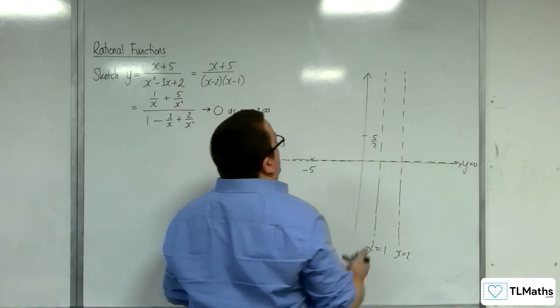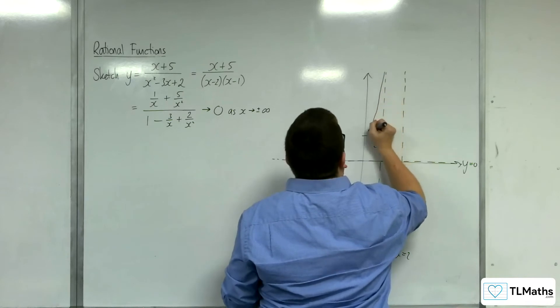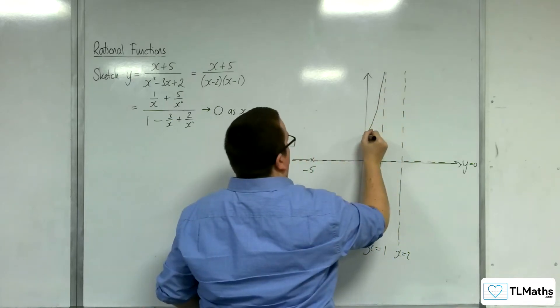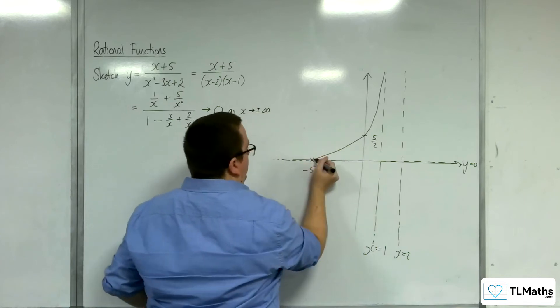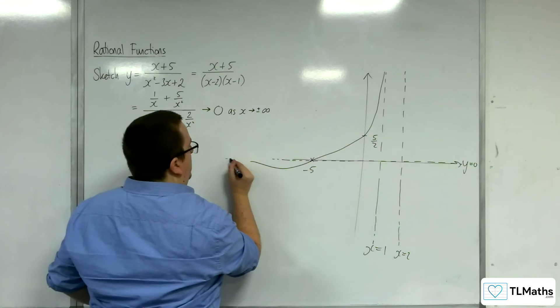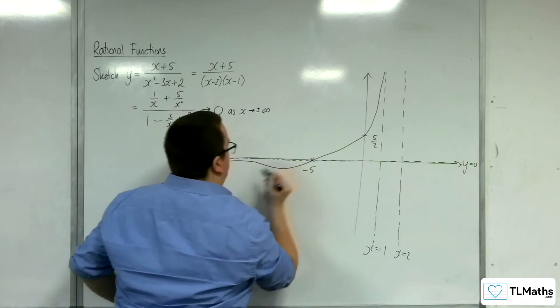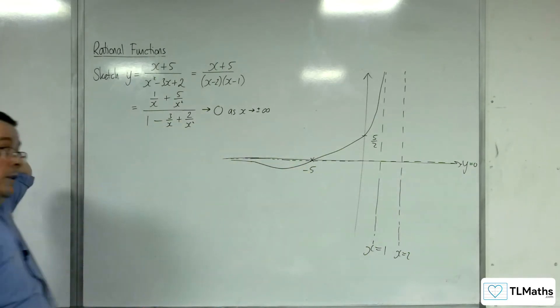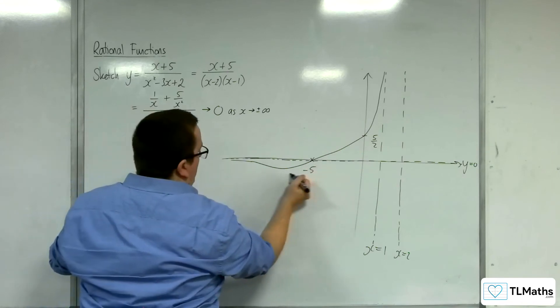So what must the curve be doing? Well, it's got to be tending towards this asymptote, and then coming down through 5 halves. We're going to have to go through minus 5 on the x-axis, and then come back on ourselves in order to tend towards that line. Okay, so we've got to come down, and then back on ourselves, so it's going to be that hump.